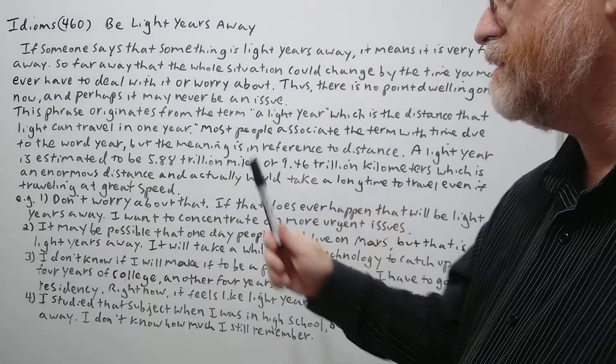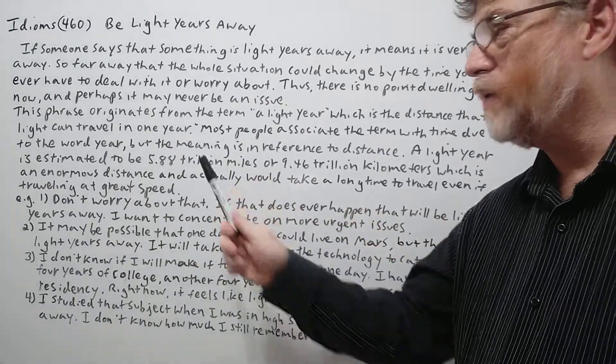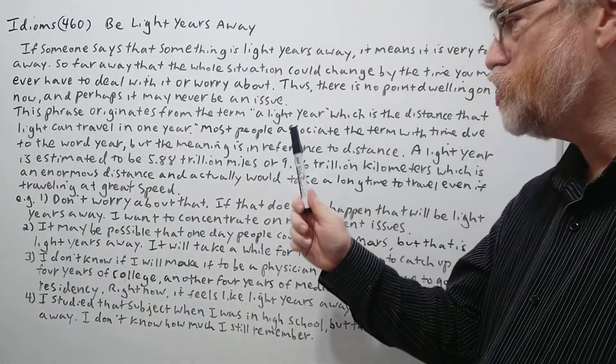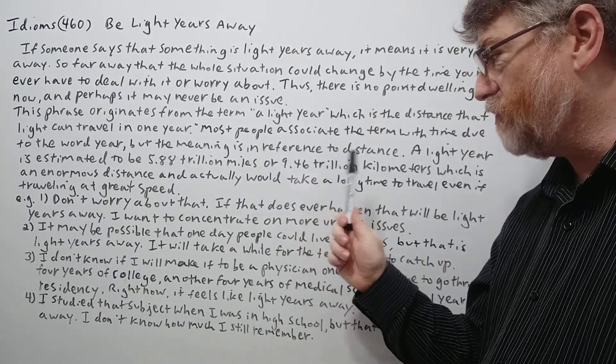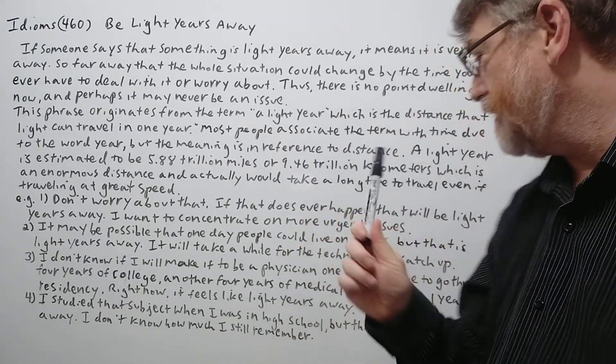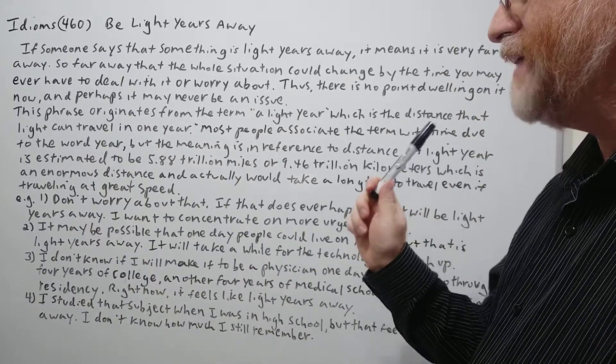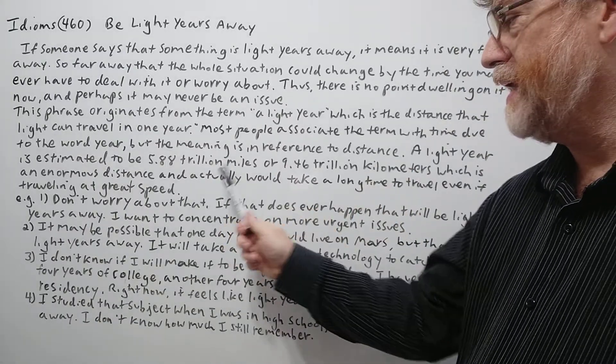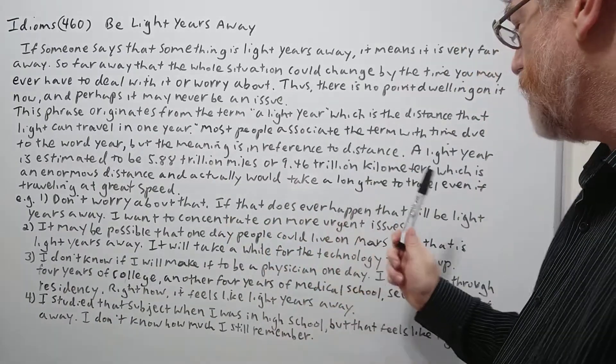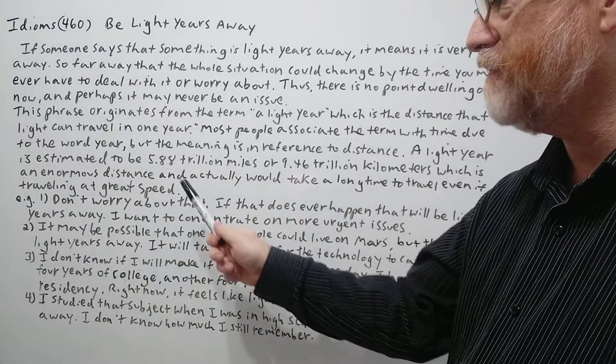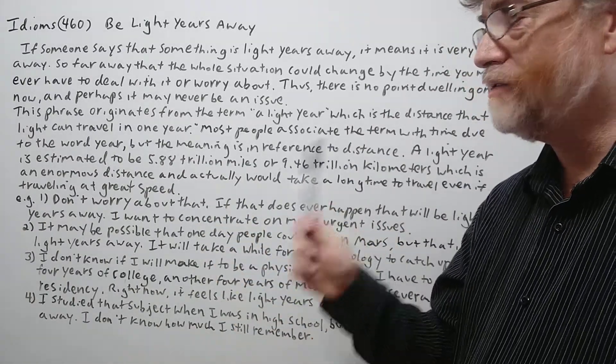A light year is estimated to be 5.88 trillion miles or 9.46 trillion kilometers, which is an enormous distance and actually would take a long time to travel even traveling at great speeds.